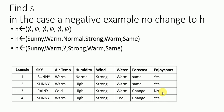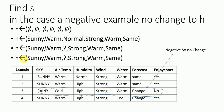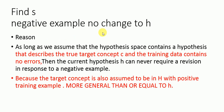The third instance is negative (no), and we do not consider negative examples. The hypothesis h keeps the same value. The reason we skip negative examples is: as long as we assume the hypothesis space contains a hypothesis describing the true target concept and the training data has no errors, the current h never requires revision in response to a negative example, since the target concept is assumed to be more general than or equal to h with positive training examples.